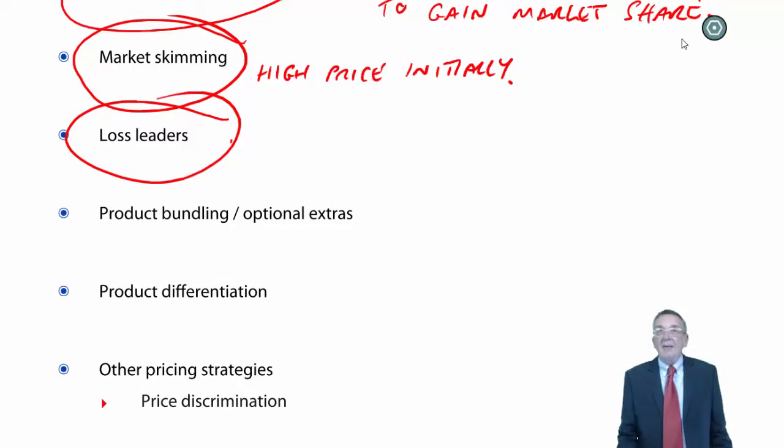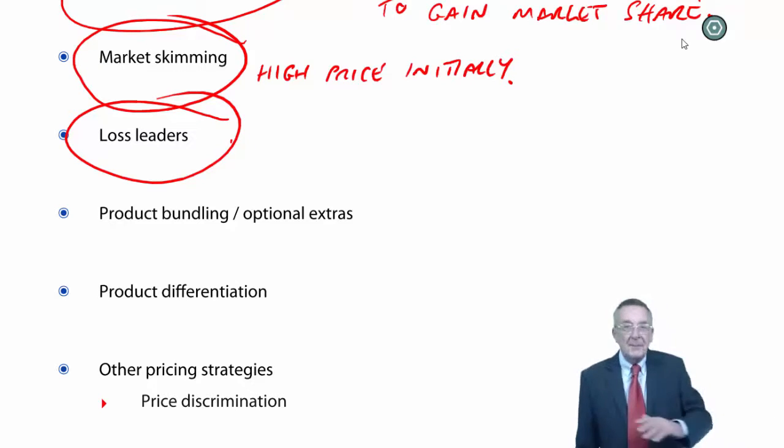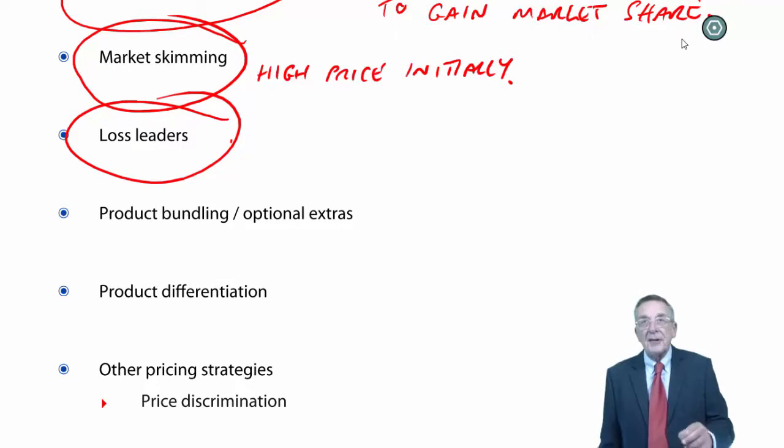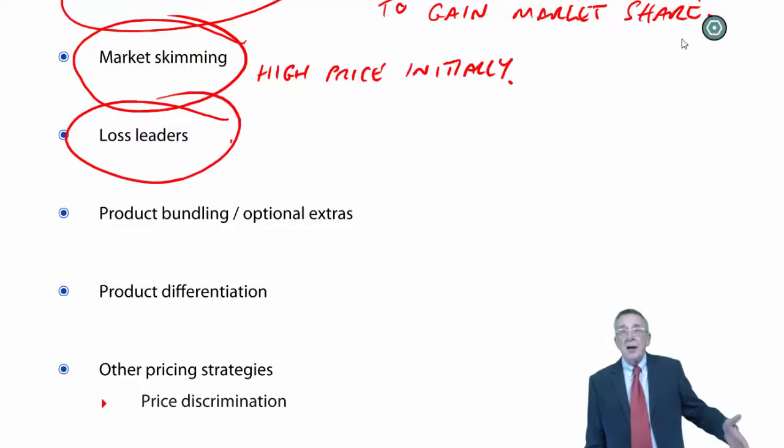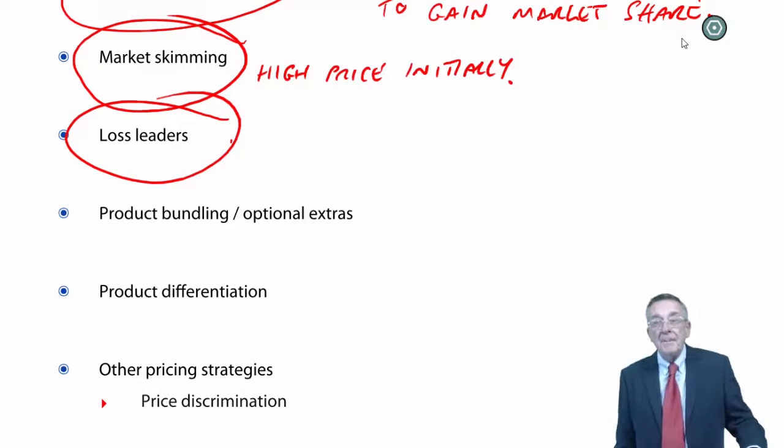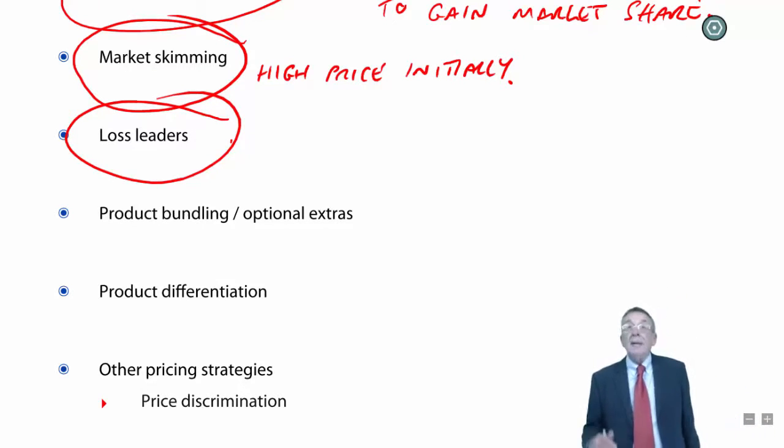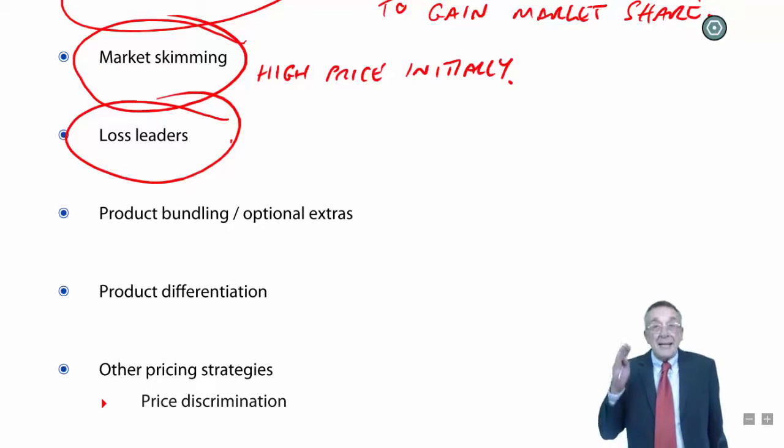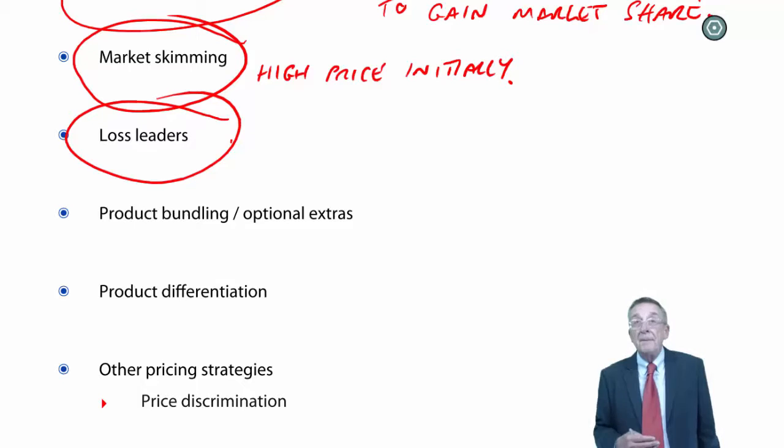And that overall, the profit they'll get from these other products more than compensates for the loss on this particular one. It's very common if you see sugar being sold at half price in a particular shop. I think very likely you might go to that shop to get the sugar. And they're hoping that it's likely, that while you're there, you'll buy other goods where they are charging normal prices.